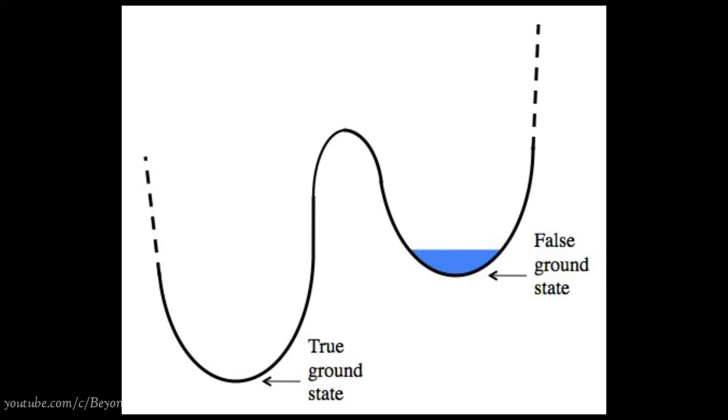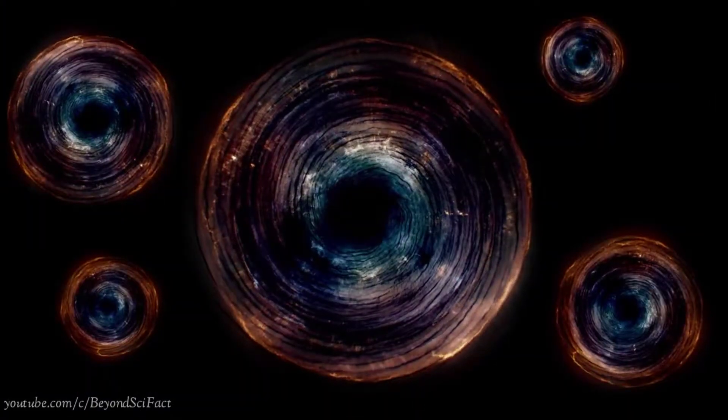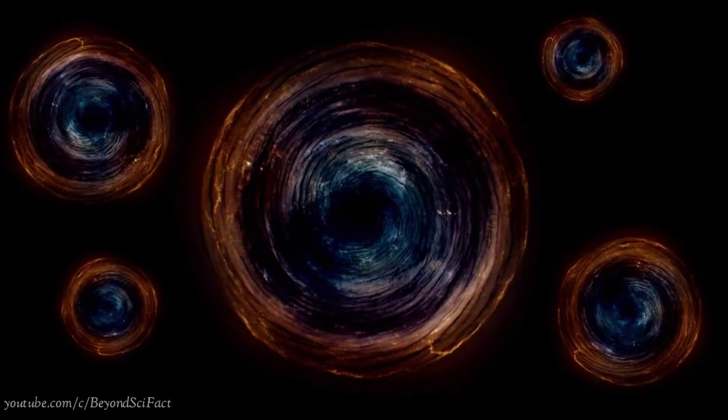The hypothetical lowest energy state is called the true vacuum. In theory, a false vacuum collapse would expand at the speed of light from the originating event. When this false vacuum state moves to true vacuum, the process is known as bubble nucleation.